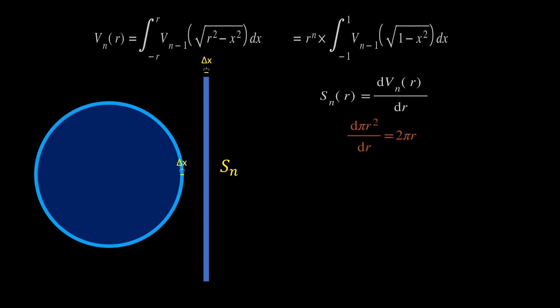You can check that the derivative of pi r squared is 2 pi r, consistent with the perimeter of a circle. The derivative of four-thirds pi r cubed is four pi r squared, which is the surface area of a sphere. And the derivative of pi squared over 2 times r to the fourth is 2 pi squared r cubed.